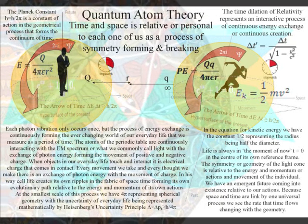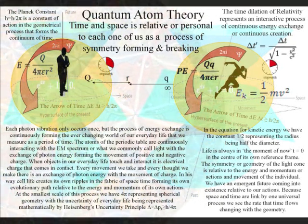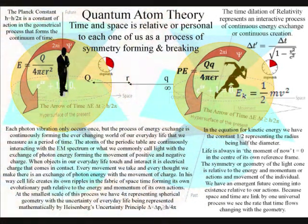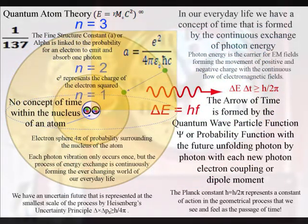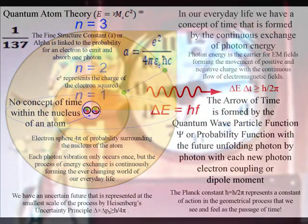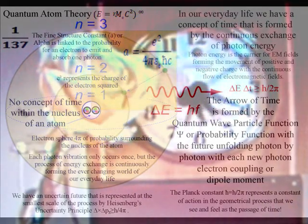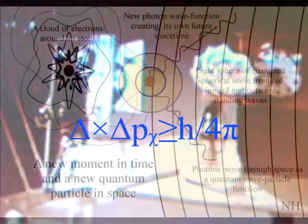At the smallest scale of the process, this energy is represented by the spontaneous absorption and emission of photon energy, relative to the atoms of the periodic table. It is this process of energy exchange that forms the ever-changing world of our everyday life, that we see and feel as a period of time.